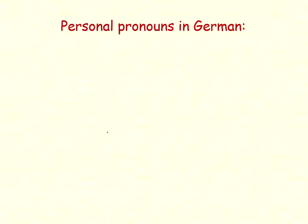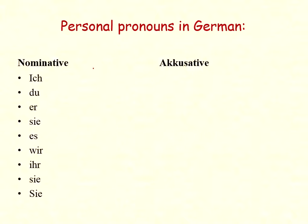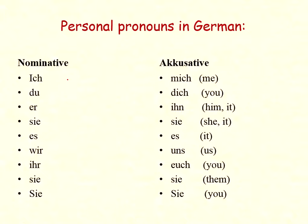Let's look at personal pronouns in German language and how we use them. We have already learned about nominative pronouns: ich, du, er, sie, es, wir, ihr, sie. Now let's see the accusative forms.